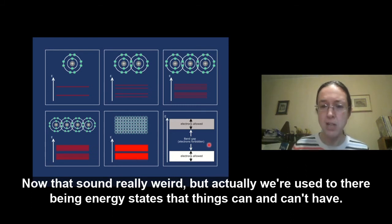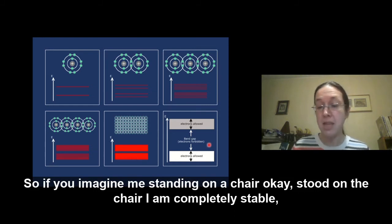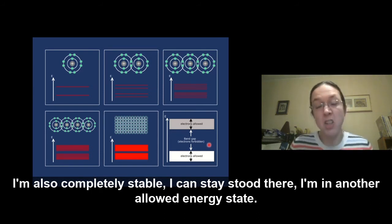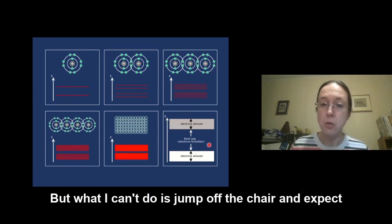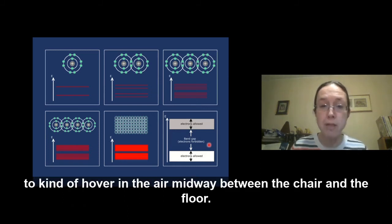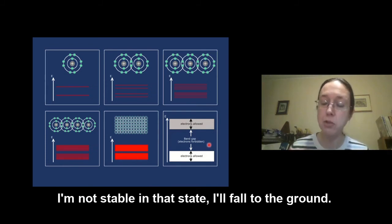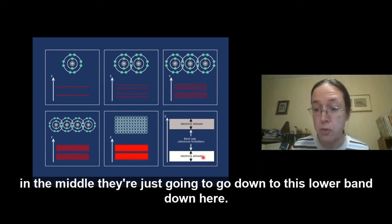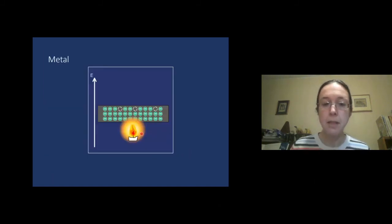Now, that sounds really weird, but actually we're used to there being energy states that things can and can't have. So if you imagine me standing on a chair, stood on the chair, I am completely stable. I am in an allowed energy state. I can step down on the floor. I'm there. I'm also completely stable. I can stay stood there. I'm in another allowed energy state. But what I can't do is jump off the chair and expect to kind of hover in the air midway between the chair and the floor. I'm not stable in that state. I'll fall to the ground. It's just the same thing here. The electrons are in a stable state in this band. They're in a stable state in this band. But anywhere in the middle, they're just going to go down to this lower band down here.